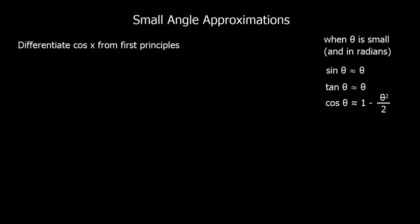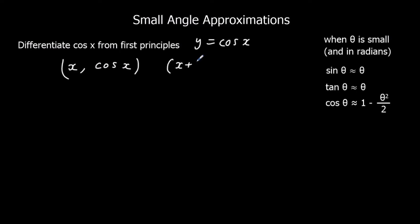This question says differentiate cos(x) from first principles. If we've got y equals cos(x), and x is x, then y is cos(x). If we add a tiny amount h, so x becomes x plus h, then y is cos(x+h). So then we're going to find the gradient.